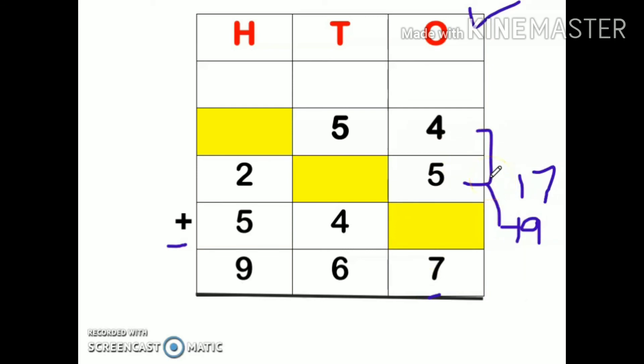7 is there, 1 will go up. Now 5 plus 1 is 6, 6 plus 4 is 10. 10 is given but I have to make 16, so I will add 6 here.